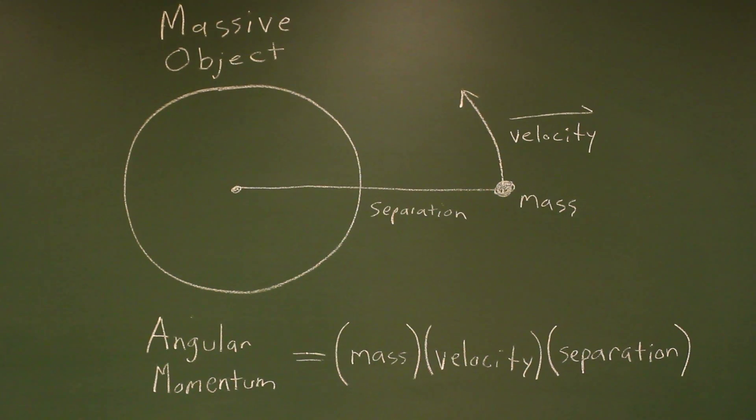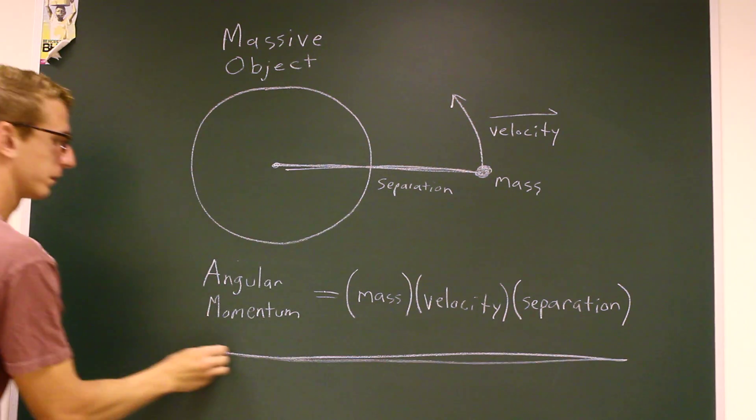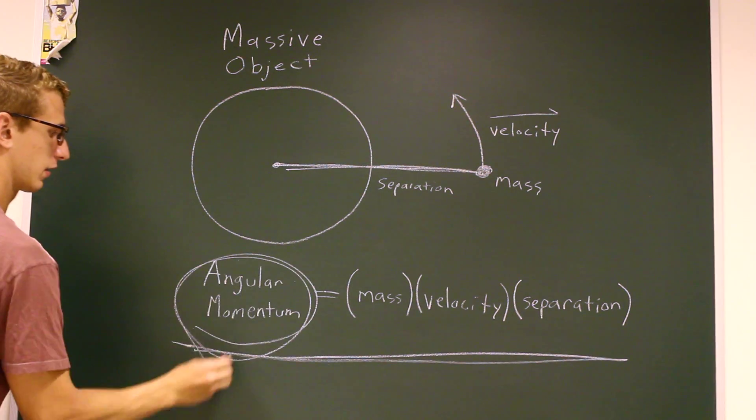Angular momentum is a tendency of a spinning object to keep spinning with the same orientation. It's the same force found in a gyroscope, and it helps the wheels of your bike resist changes in the bike's upright position.